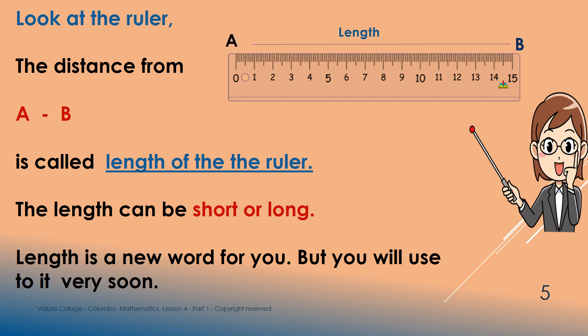I have marked one end of the ruler as the A. The other end is B. Can you find A and B?